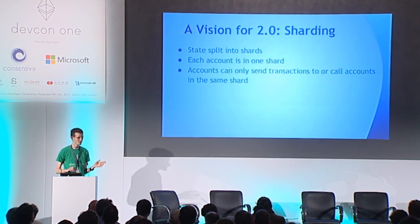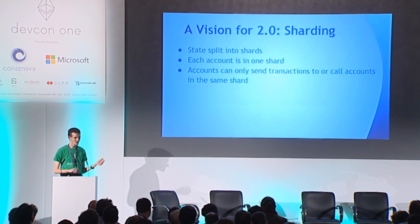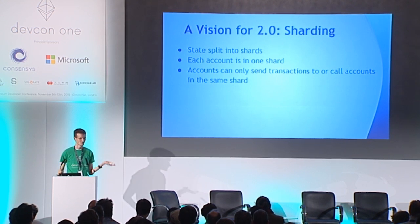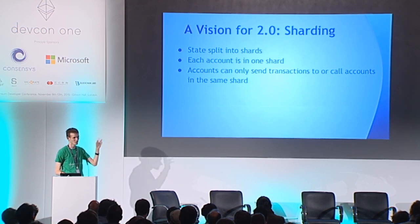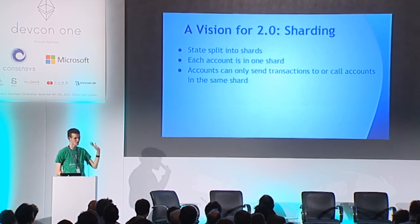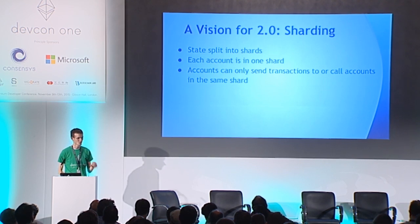You can probably have a few thousand different applications and each application can kind of do its own thing. You could have a shard that has Gnosis on it, a shard that has Augur and potentially three other things on it, a shard that has five other things.